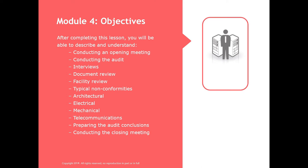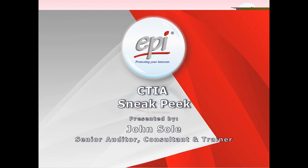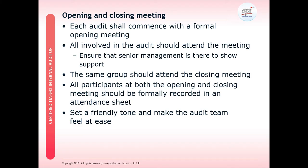Nonconformities or findings could be within architectural elements, electrical elements, cooling and mechanical attributes, or the way that the telecommunication systems, distributors and various telecommunication spaces have been deployed. We will look at how to prepare the audit conclusions. At the end of any audit, we also have to have a closing meeting to do a review of the audit findings.